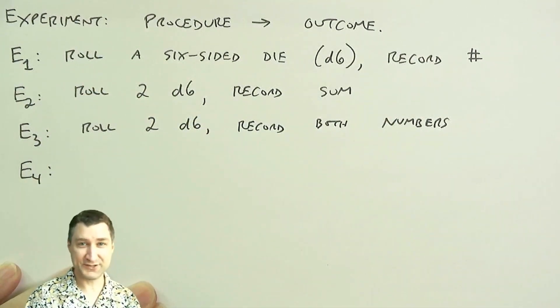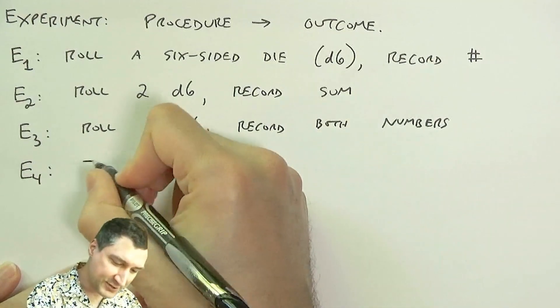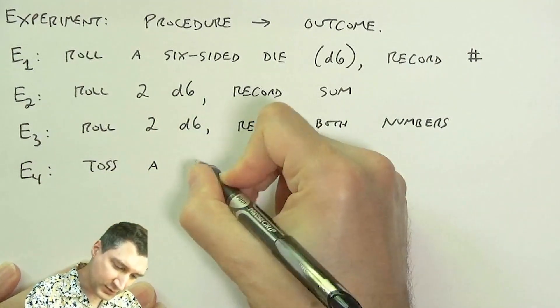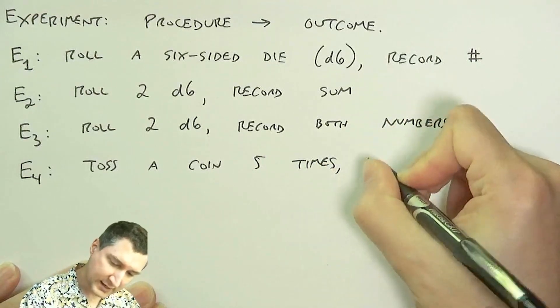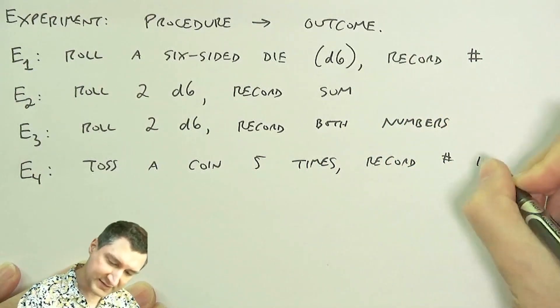Moving on to coins, another thing you're going to see a lot in probability. So I could toss a coin five times, and I could record the number of heads.